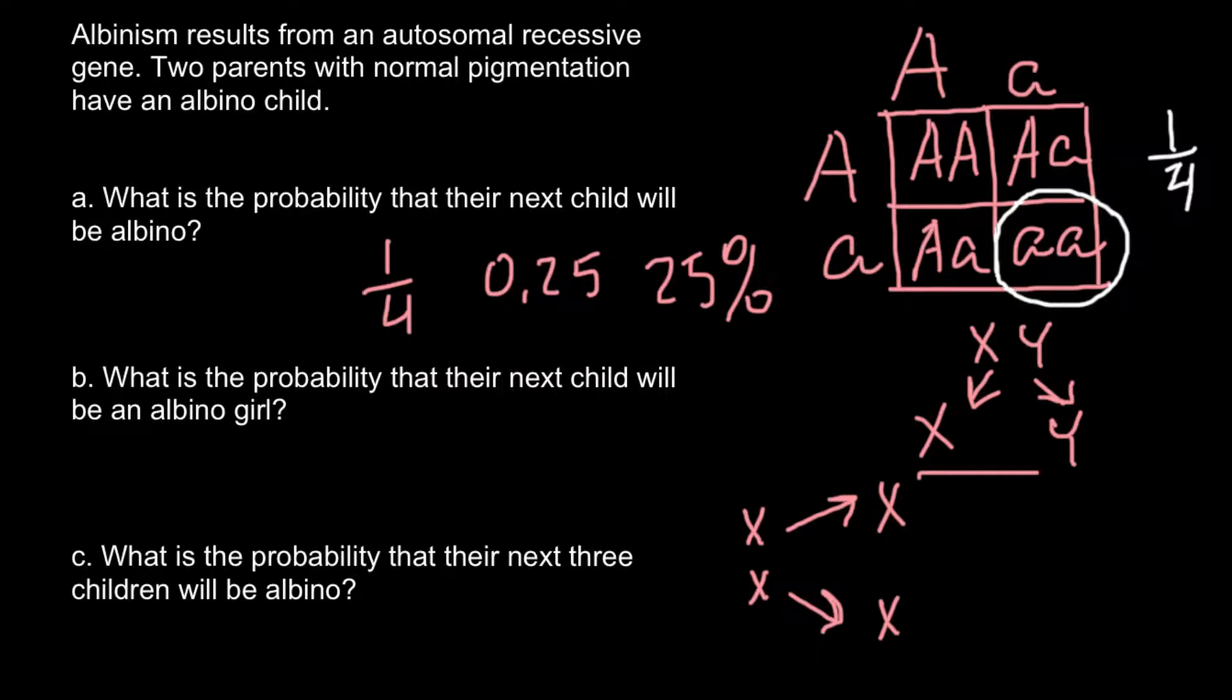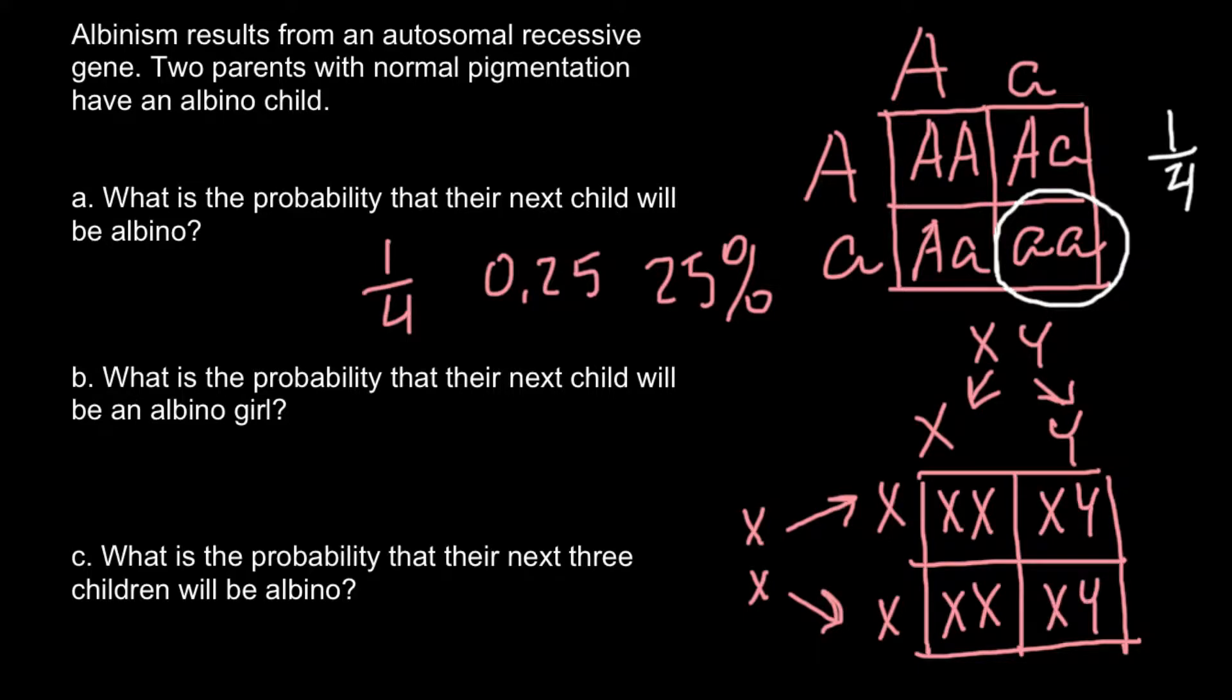When we build a Punnett square, we would see that the probability of the gender of such a couple would be 50% girls and 50% males. So let me circle it. 50% boys and another 50% would be girls.